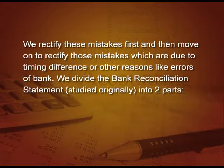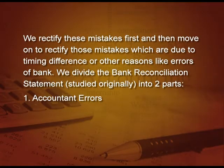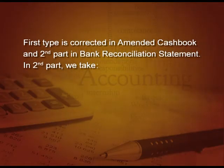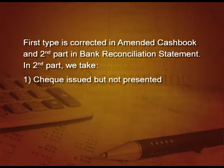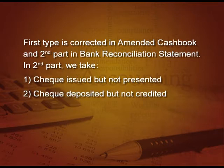We divide the bank reconciliation statement into two parts. The first part covers accountant errors, and the second part covers other errors. The first type of error is corrected in the amended cash book, and the second part is corrected in the bank reconciliation statement. In the second part we take: first, check issued but not presented; second, check deposited but not credited; and third, errors by the bank. Let us understand this by doing one simple problem on this concept.